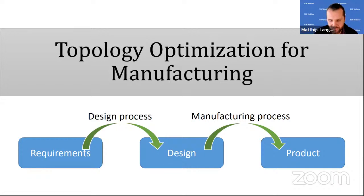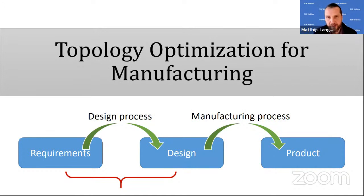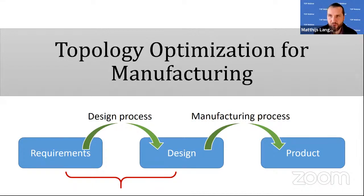In our field, most literature focuses on the first step: how to make the link between requirements and an optimal design. That is important because there are fundamental questions to be answered. But if we only focus on this part, we may end up with a design that is not manufacturable — requiring modifications that are either very expensive or perhaps impossible, and which destroy the optimality of the design.